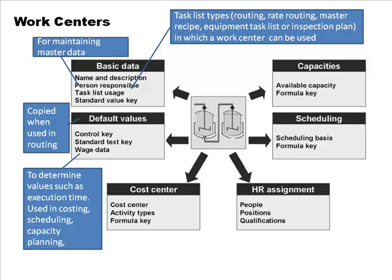All required values are copied from the work center into the routing, which then uses these values to calculate how much time operations are going to take. It is possible to manually override those values in the routing and add additional time if needed.